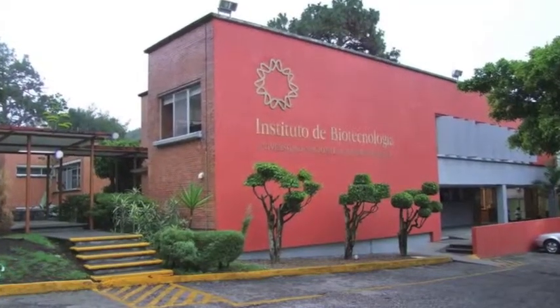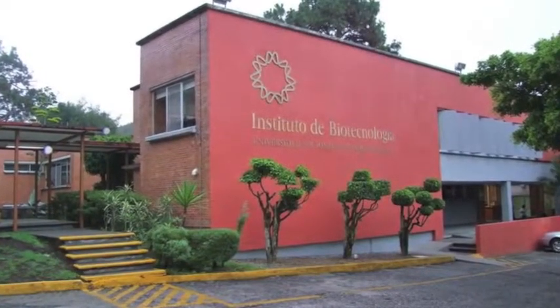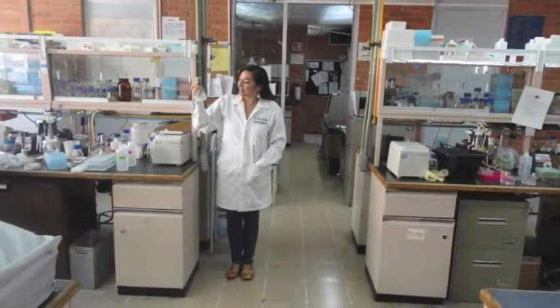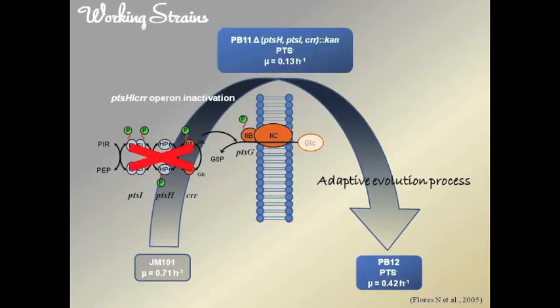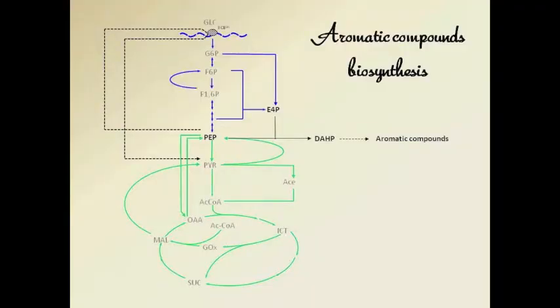In our group, we're interested in E. coli metabolism to develop metabolic engineering strategies to produce valuable compounds. For this reason, two E. coli mutants devoid of PTS were generated, the PB11 and PB12 strains. Both strains can, in theory, double PEP availability, which is one of the precursors of the aromatic compounds.